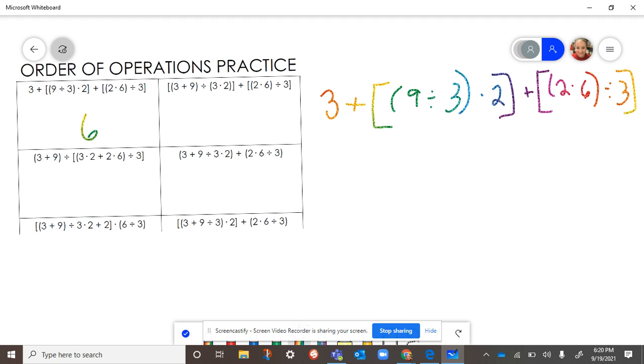So we're going to look at this first one. We've got three plus, and then you have the brackets and inside the brackets, you've got parentheses with nine divided by three. And then outside you've got the times two and then plus you've got another set of brackets, two times six, and then divided by three.